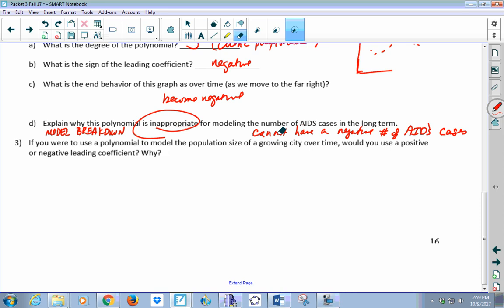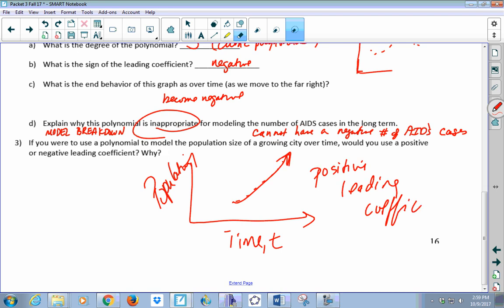So if you were using a polynomial to model population size of a growing city over time, would you use a positive or a negative leading coefficient? So you'd be having time on this axis and your population size on this axis, and all you know is that your population is growing. So since the end behavior is increasing over time, you would want to use a positive leading coefficient. Now, we don't know if it's going to be an even degree or an odd degree because all we're focused on is the end behavior. And the end behavior for both an even degree or an odd degree function will be increasing as your independent variable increases. So we definitely want to have a leading coefficient that's positive.